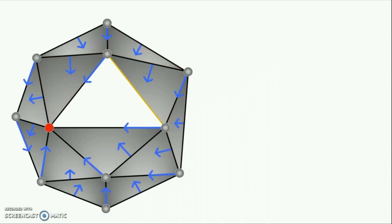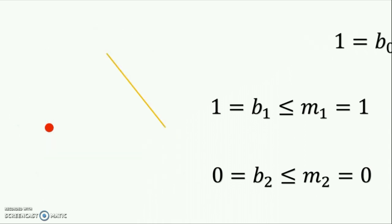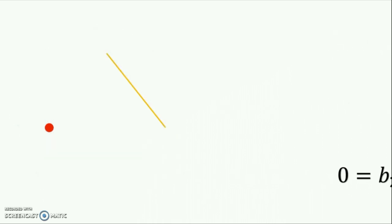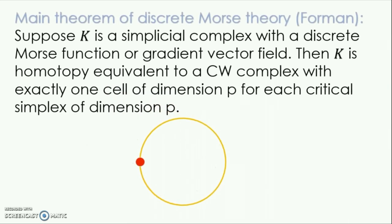This gradient vector field only has a single critical vertex and a single critical edge. So the weak Morse inequalities give us a much better estimate for the Betty numbers. In fact, they give us the Betty numbers on the nose. But there is more that discrete Morse theory can tell us. If we remove all of the free pairs, then we see that we are left with two critical simplices and that we can rebuild the simplicial complex up to homotopy from these two critical simplices.